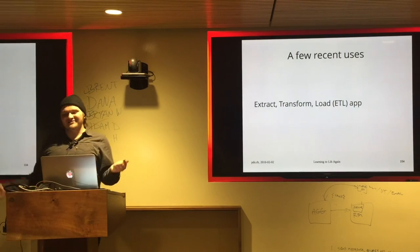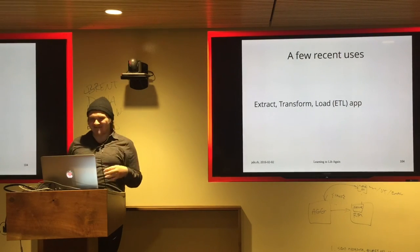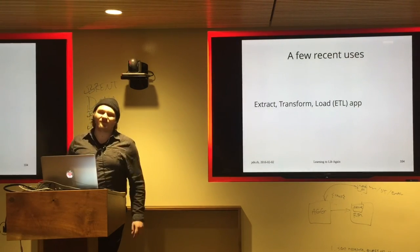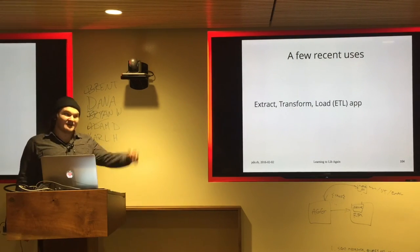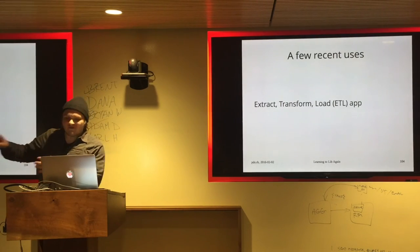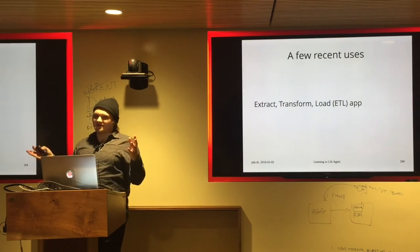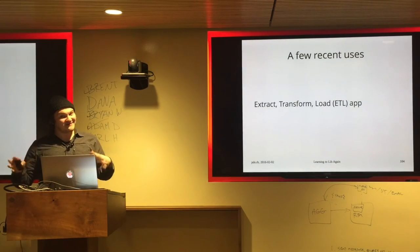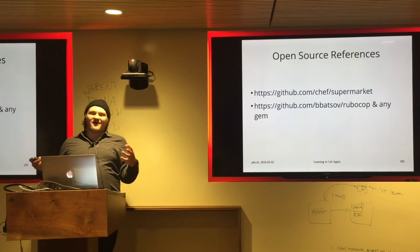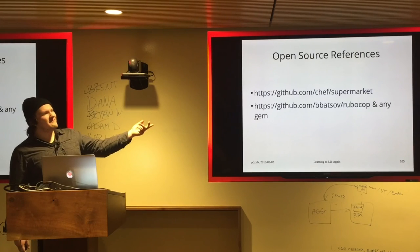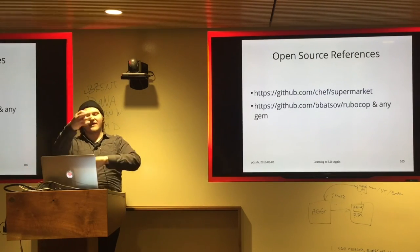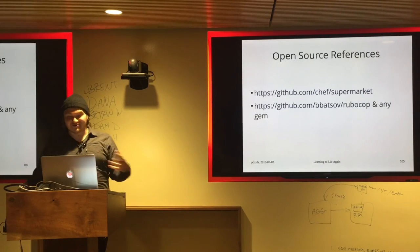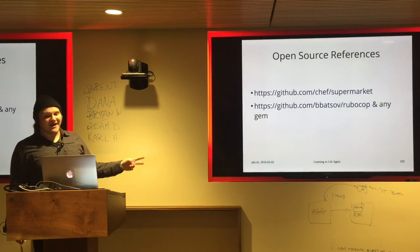The project I'm currently working on is an extract-transform-load app — it takes data, transforms it through big hash manipulation, and makes a POST request to load it somewhere else. I built it in Rails because Rails has all these nice things people know. Everything is in lib. There are maybe 500 test examples and they run in about 10 seconds — it's really good. If you want to look at examples online, Chef's Supermarket is an open source project I worked on about two years ago that has some code in lib, and any Ruby gem is a great place to look at lib code.